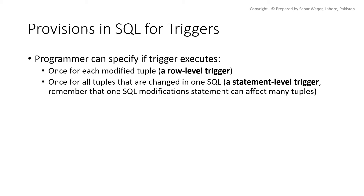A row-level trigger executes once for every modified tuple. If 1500 tuples are modified, then this trigger will be fired 1500 times. A statement-level trigger executes once for all the tuples changed in one SQL statement. It is usually used when doing bulk operations — for example, adding 10,000 products at once; this type of trigger will be fired only one time.